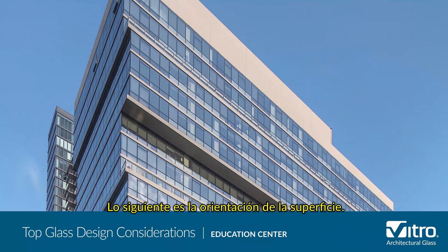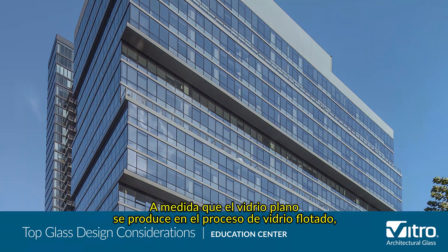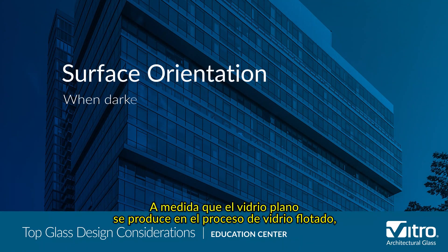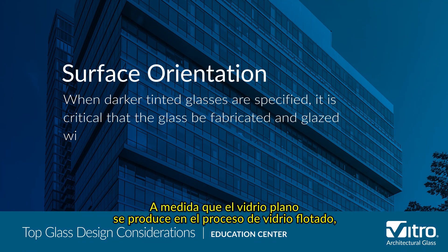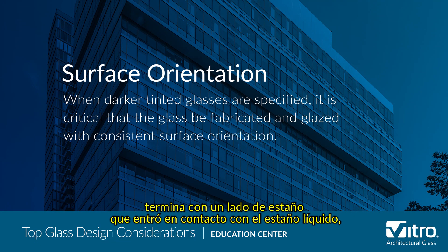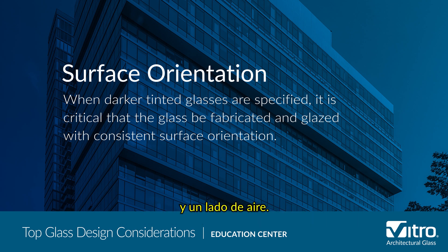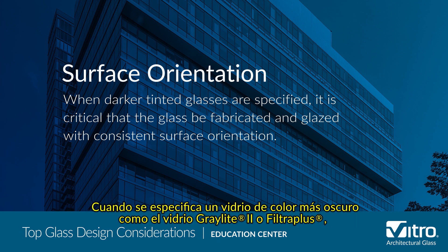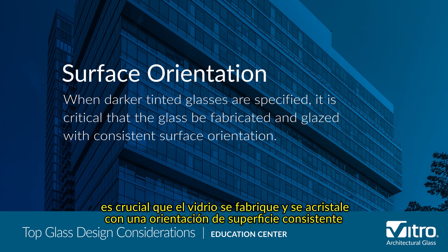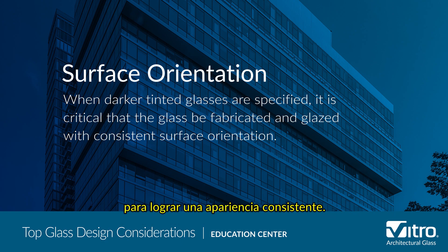Next is surface orientation. As flat glass is produced in the float glass process, it ends up with a tin side that contacted the liquid tin and an air side. When darker tinted glass such as gray light tube glass is specified, it is critical that the glass be fabricated and glazed with a consistent surface orientation in order to achieve a consistent appearance.